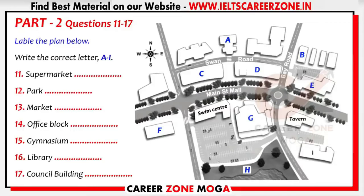The swimming pool will remain where it is, of course. To make it safer for students to cross Swan Road, a pedestrian crossing will be installed in front of the school gymnasium. We've planned a gap in the trees on the Main Street Mall so that students will be able to walk across straight to the pool. Another pedestrian crossing to the west of the pool will give students and other users safer access to the new library. Library users will be able to share the supermarket parking. The east end of Swan Road will be converted into a public car park, between the council building and the market.